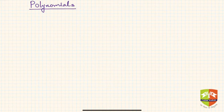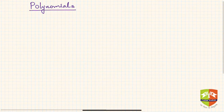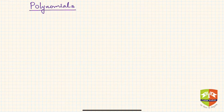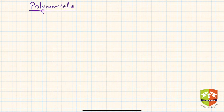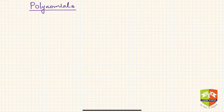Welcome to this new session on polynomials. We are going to discuss what polynomials are, how they are defined, why they are called so, and the different types of polynomials. We'll also visualize polynomials on graph paper, and study zeros of a polynomial and properties around them. In this session specifically, we'll cover what polynomials are, how to define them, and the different types.